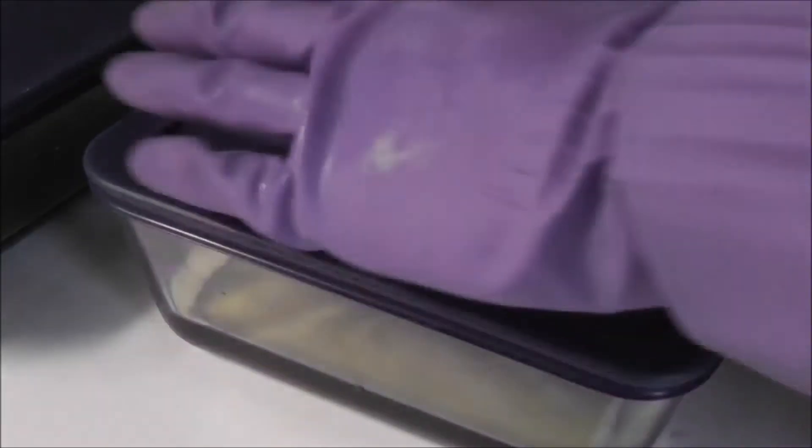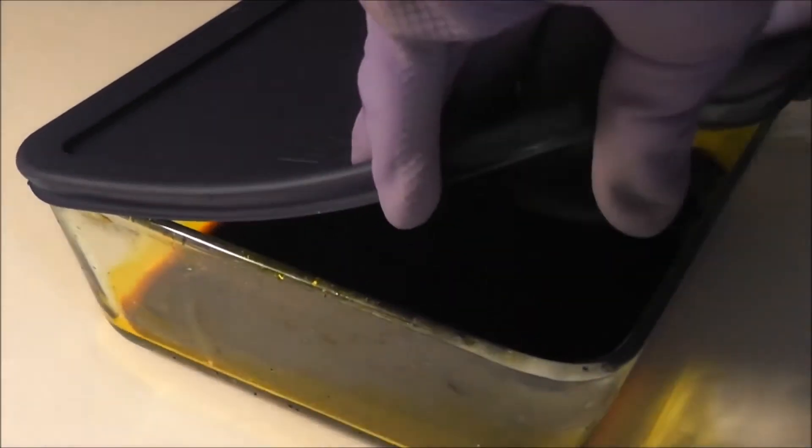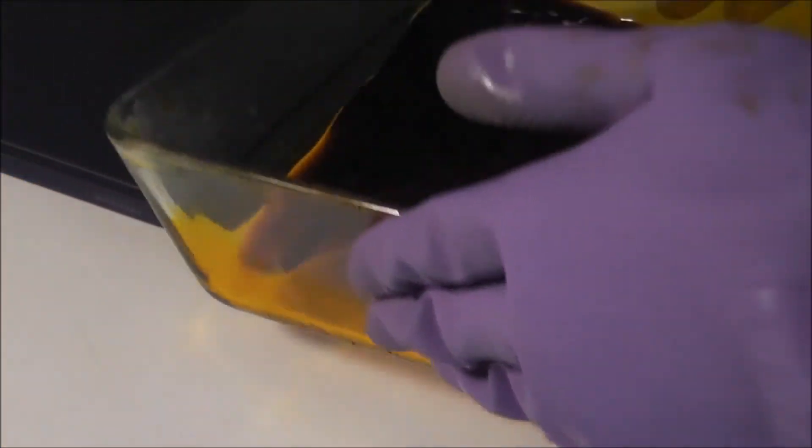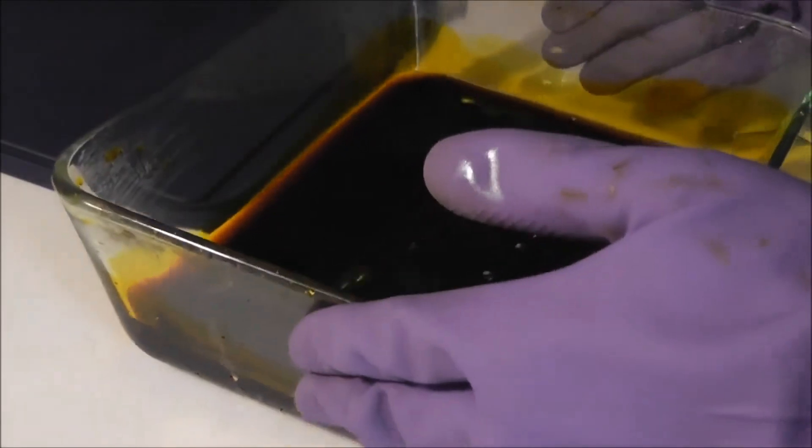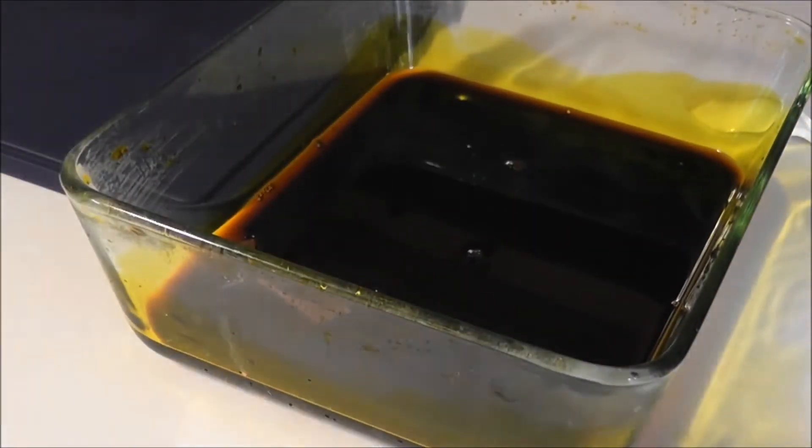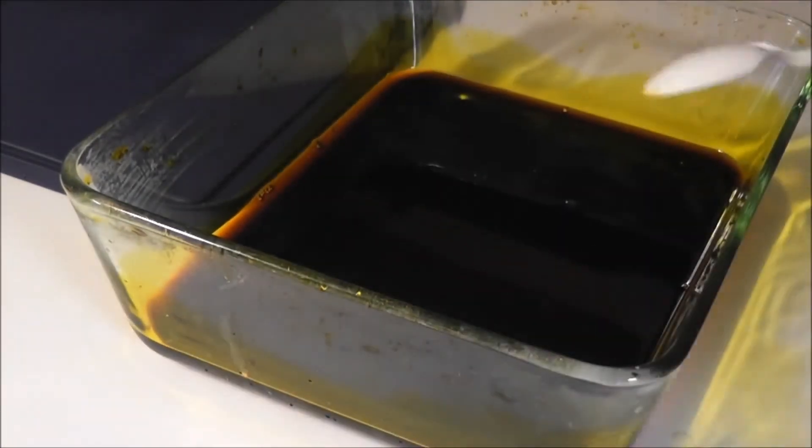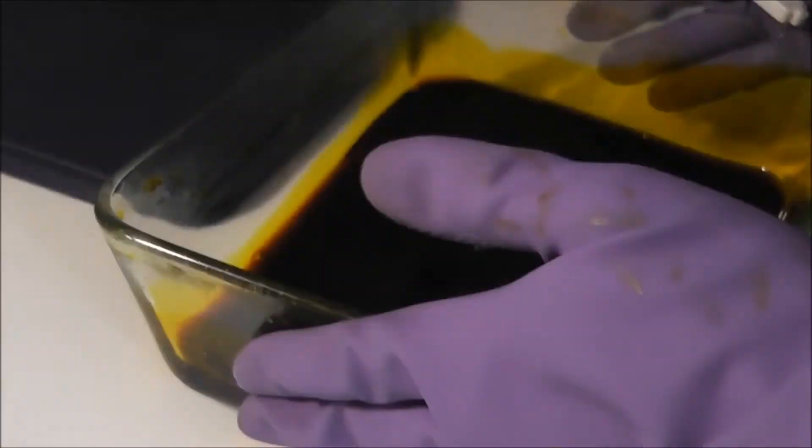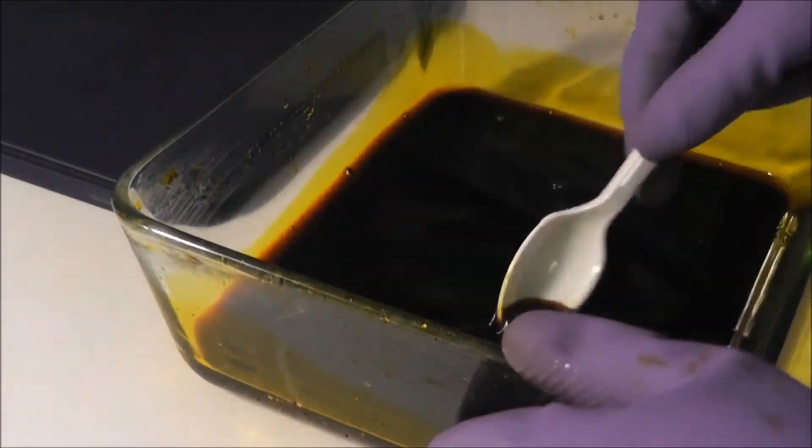The developer solution cannot be reused, so dispose of it correctly. Now we have gotten rid of the exposed photosensitive coating and now etch the board in ferric chloride. Put the board in ferric chloride and stir every three to five minutes. Depending on how used your ferric chloride is, etching can take 20 minutes to one hour.